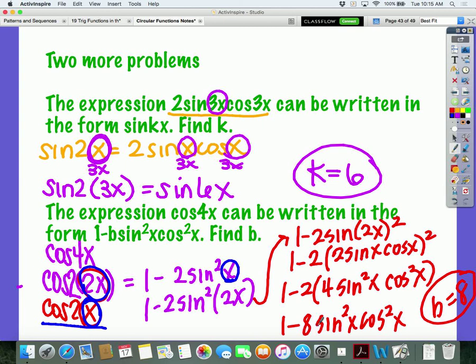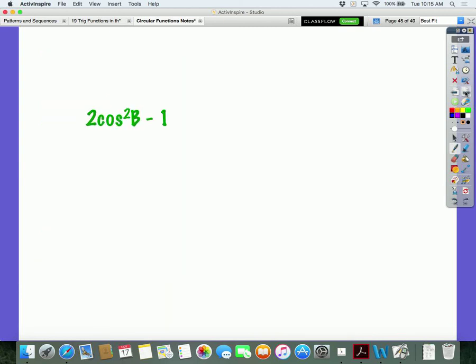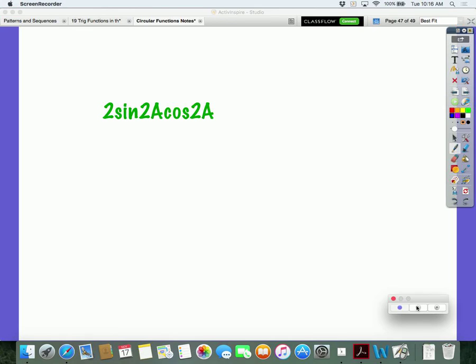So, now you guys are going to practice doing this, okay? That's what the whiteboards are for. So, let's take a look. So, use an appropriate double angle formula to simplify. So, in other words, this can be written as one of our double angle formulas, just altered a little bit. So, I want you to give me, what is that double angle formula that would give me 2 sine 2a cosine 2a?